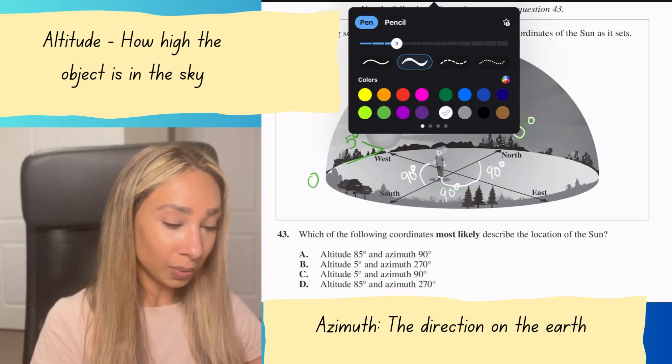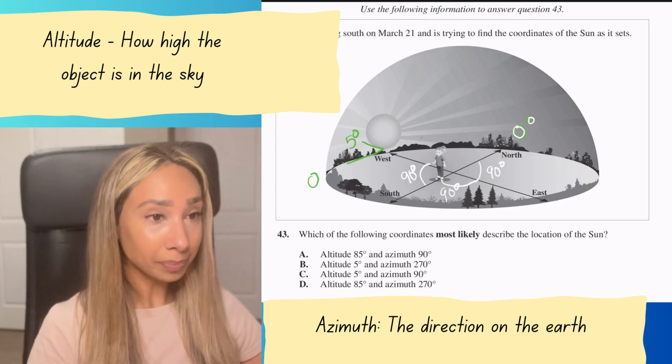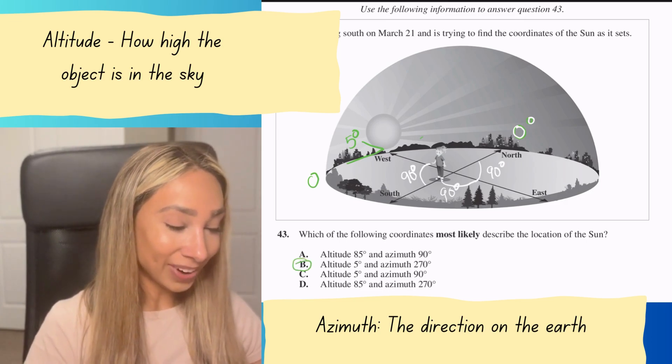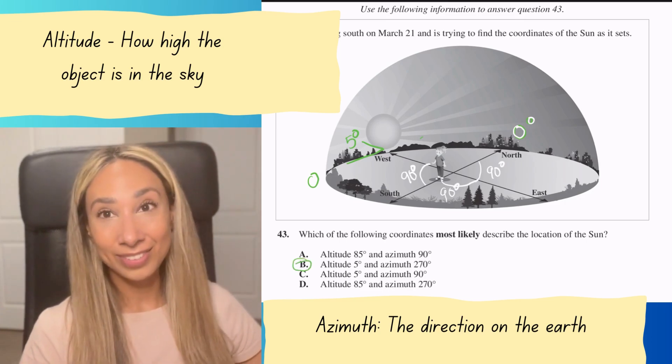We can add those up: 90 plus 90 plus 90 gives us 270. Our azimuth starting from north going to the Sun is 270. Only one option fits that: option B, with our altitude of 5 degrees and azimuth of 270.